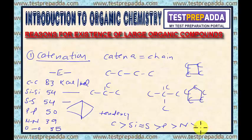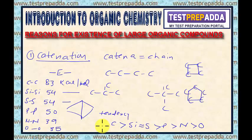The order continues: phosphorus greater than nitrogen greater than oxygen. The point is clear — the tendency to show catenation follows this order, and carbon has the maximum tendency to form chains of identical atoms. So this is the first reason for the existence of a large number of organic compounds.